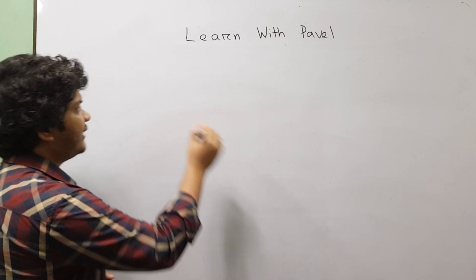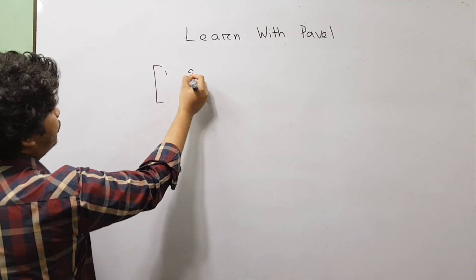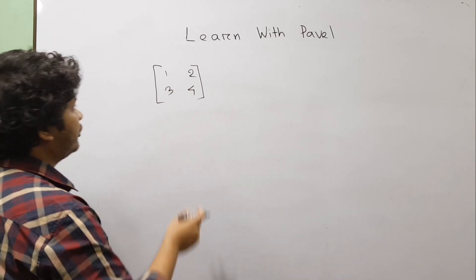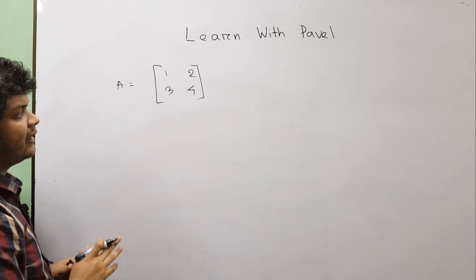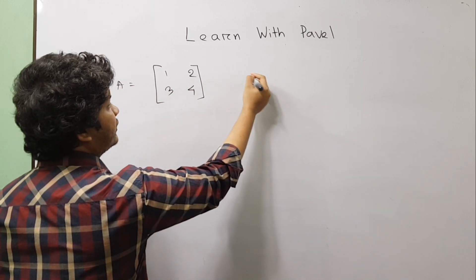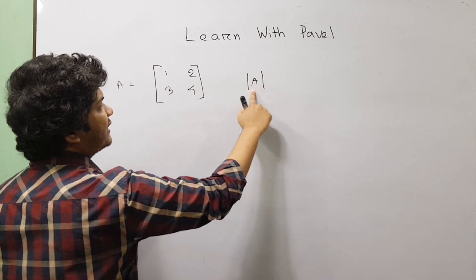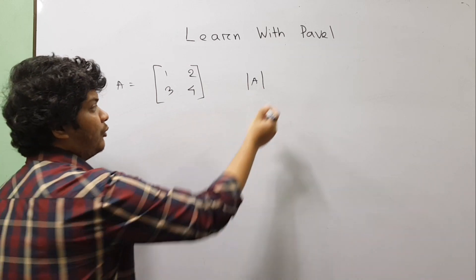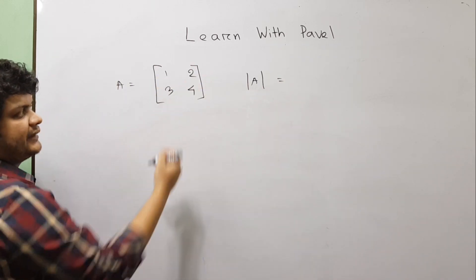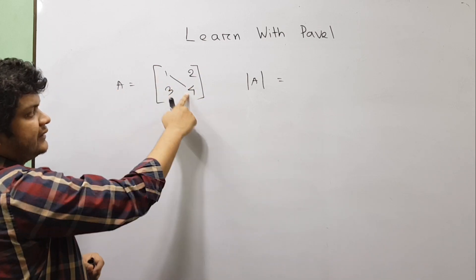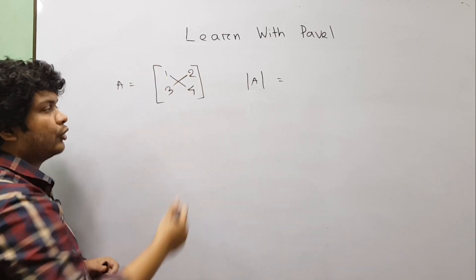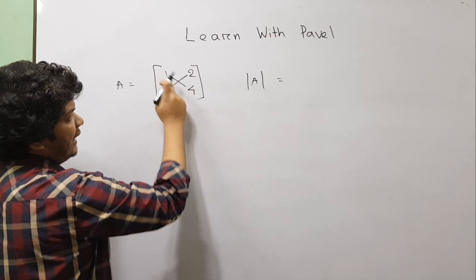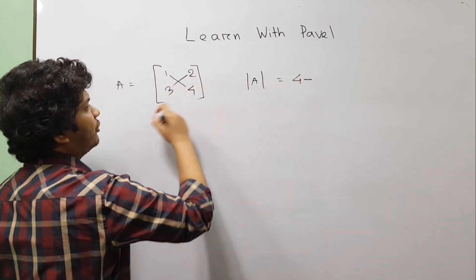Suppose we have a matrix A with values 2, 3, 4. This matrix is A. This is the 8-2-2 matrix, this is the main matrix, and this is the 4-2-3-6 matrix.